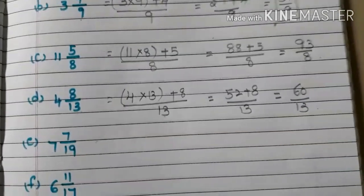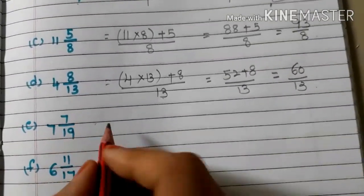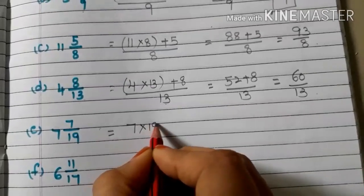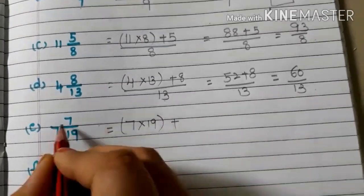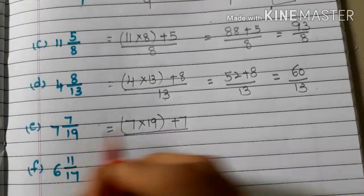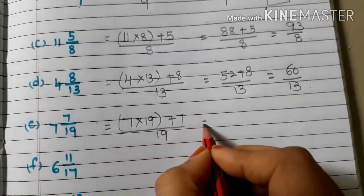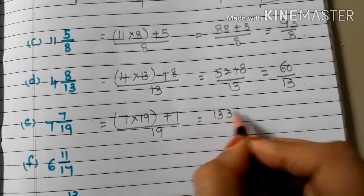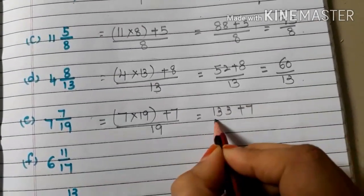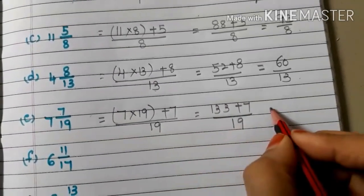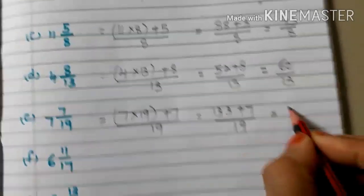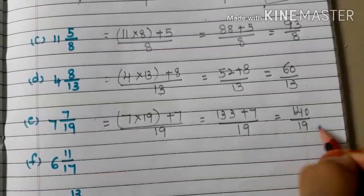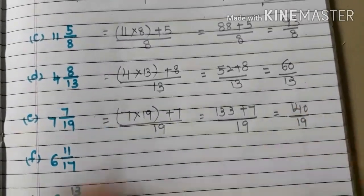E: 7 and 7/19. Whole number into denominator plus numerator, by denominator 19. 7 nineteens are 133, plus 7, by 19. 133 plus 7 is 140/19. So the answer is 140/19.